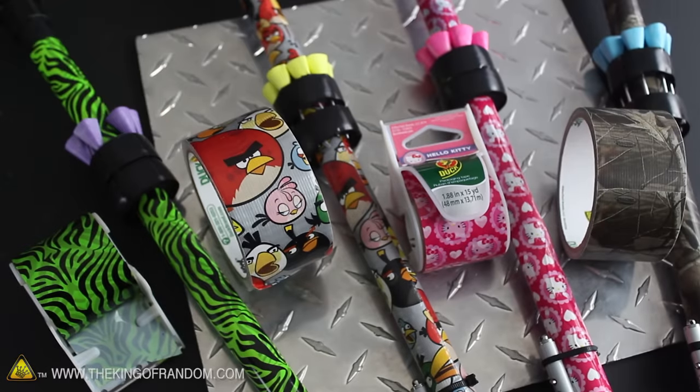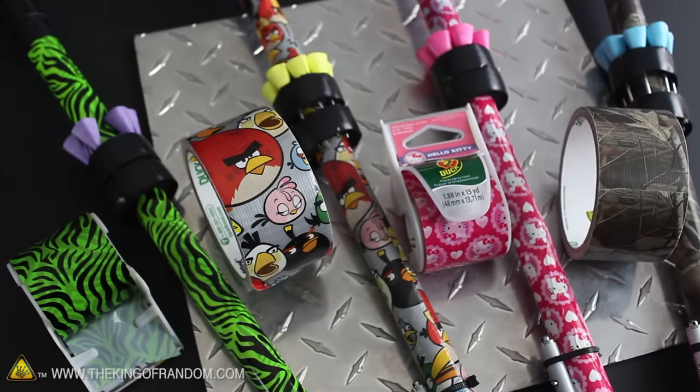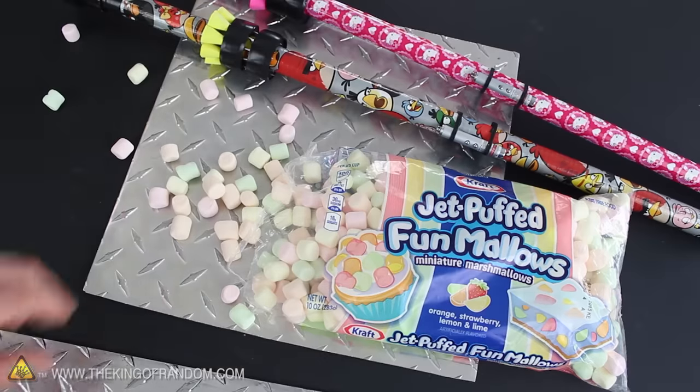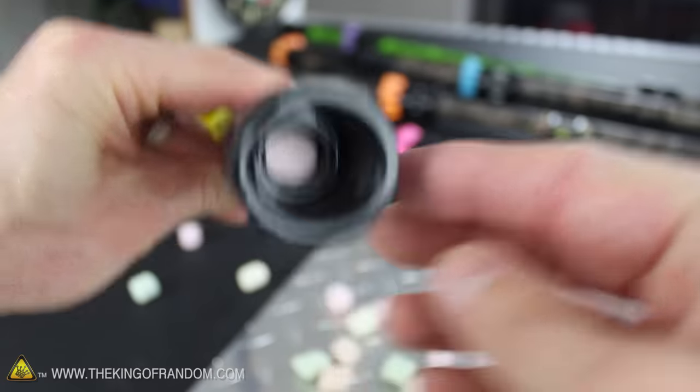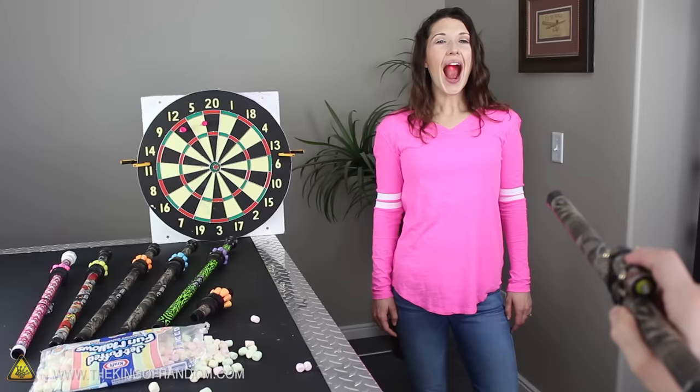Now you've probably realized that if you use different rolls of tape, you can customize your blowgun any way you want. And if you want a safer kind of ammo, try using colored mini marshmallows. They're the perfect fit for half inch PVC and can be shot safely, but still with incredible accuracy.